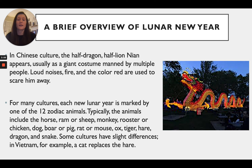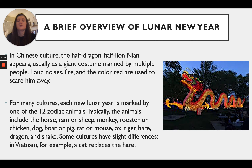For many cultures, each new lunar year is marked by one of 12 zodiac animals. The animals typically include the horse, ram or sheep, monkey, rooster or chicken, dog, boar or pig, rat or mouse, ox, tiger, hare, dragon, and snake. In some cultures there are slight differences — for example, in Vietnam a cat replaces the hare.